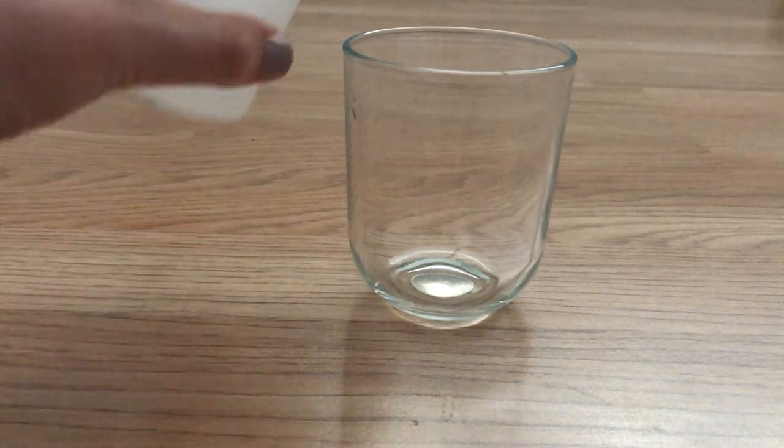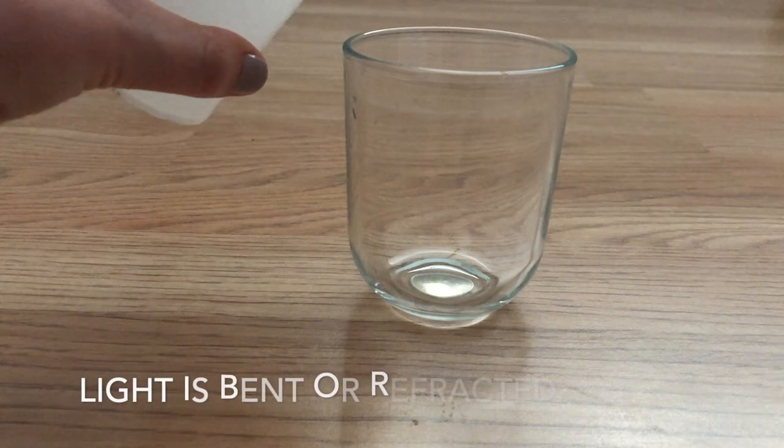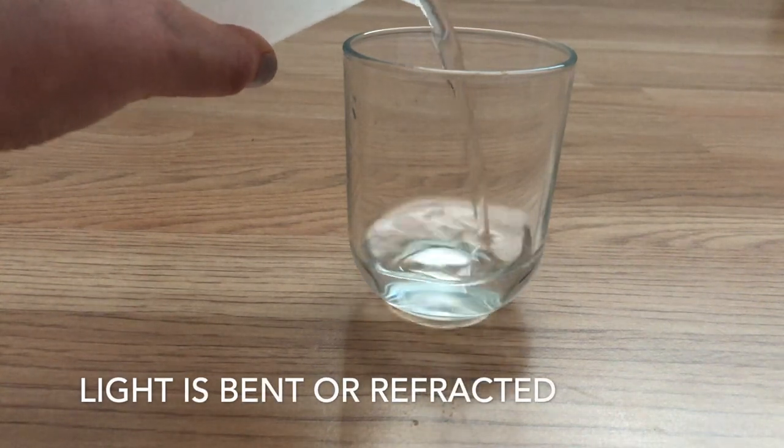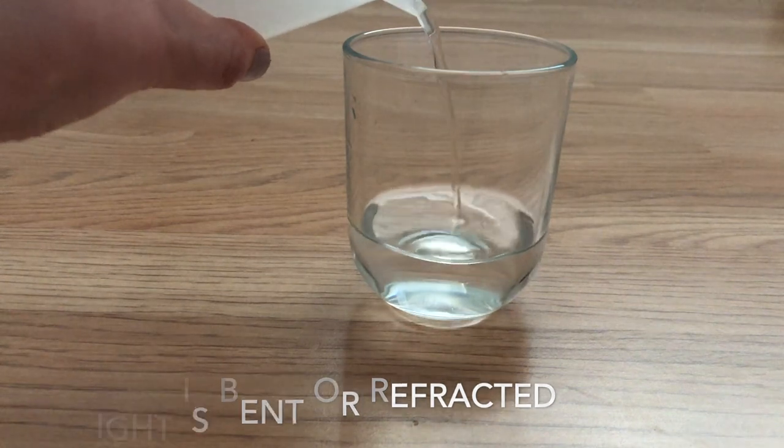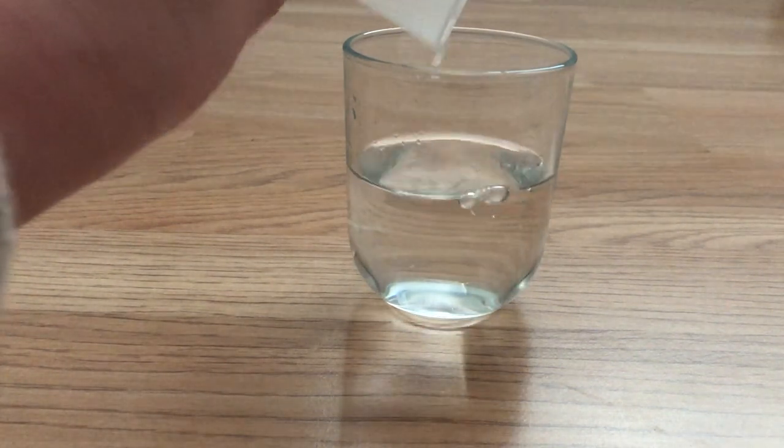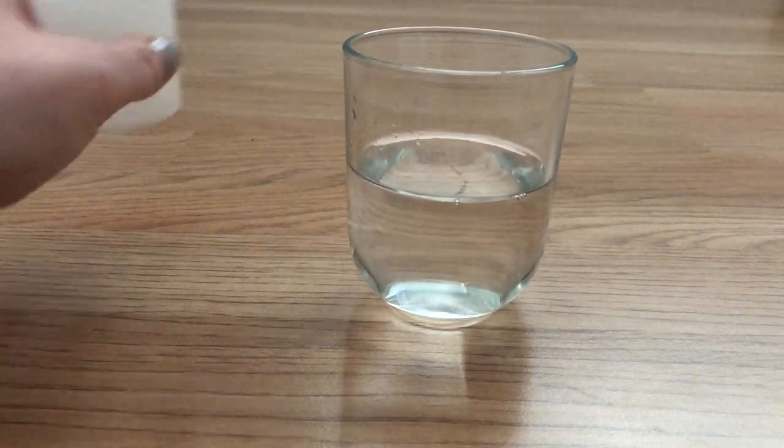However, when we pour in water, the light is bent, or to use a science word, refracted, and doesn't make it into your eyes, which is why the coin appears to disappear.